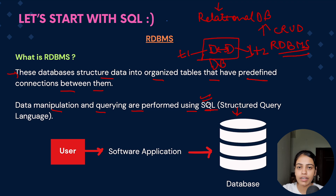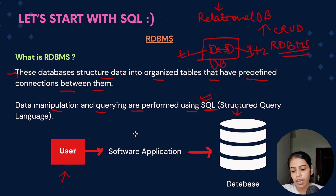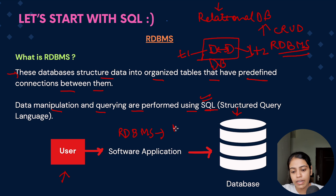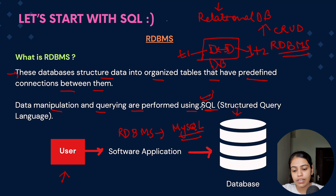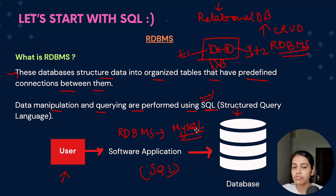We use SQL as a programming language to perform any kind of CRUD operation. So here if you see, there is a user using a software application — in terms of relational databases we use RDBMS. An example of RDBMS is MySQL. MySQL is the software that helps us perform CRUD operations, and SQL is the programming language we use to do manipulation or querying on the data. So MySQL is the RDBMS and SQL is the programming language used to perform the queries.